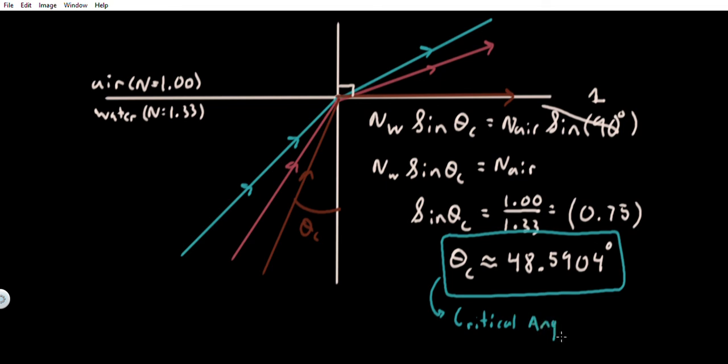Now if you've taken calculus before, a critical point was a point where the concavity would change—it was like a changing point. So this applies here. We call this the critical angle because any angle greater than the critical angle would be completely internally reflected. No more refraction would happen for angles greater than the critical angle.